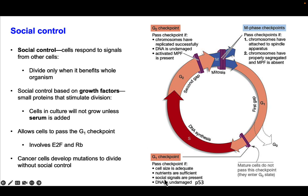At this checkpoint, cells also monitor for social signals. Social control is the cell's ability to respond to signals from other cells, meaning they only divide when it benefits the whole organism. Social control is usually based on sensing growth factors — small proteins that stimulate cell division. Cells in culture will not grow unless serum containing growth factors is added. If those growth factors are present, cells can pass the G1 checkpoint, involving proteins called E2F and RB. Cancer cells develop mutations that allow them to divide without social control.